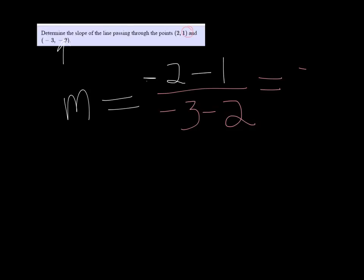So negative 2 minus 1 is negative 3, and negative 3 minus 2 is negative 5. Negative divided by negative makes it positive, so the slope of this line is 3 fifths.